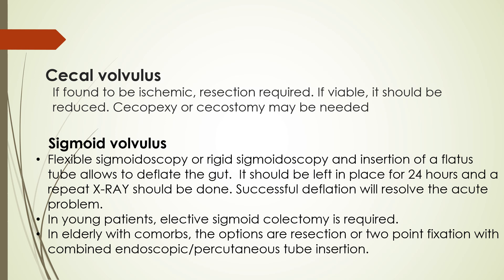In sigmoid volvulus, a flatus tube is inserted with the help of a flexible or rigid sigmoidoscope to deflate the gut. This is left in place for 24 hours and a repeat x-ray is done. In elderly patients with comorbidities, the options are to resect or to do a two-point fixation with a combined endoscopic or percutaneous tube insertion.